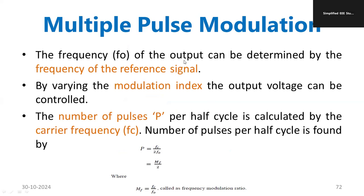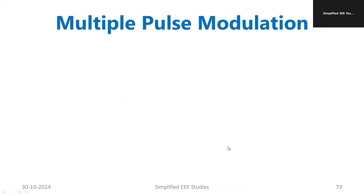The frequency of the output voltage is determined by the frequency of the reference signal. By varying the modulation index, you can easily vary the output voltage. The number of pulses per half cycle is calculated by the carrier frequency fc using the formula: number of pulses p = fc / (2 × f0). Since fc / f0 is mf, we get p = mf / 2. Therefore, mf = 2p, which is also known as the modulation ratio or modulation index.